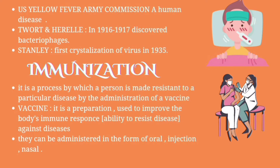Next, immunization. What is immunization? It is a process by which a person is made resistant to a particular disease by the administration of a vaccine. A vaccine is a preparation used to improve the body's immune response — meaning the ability to resist disease. Vaccines can be administered orally, by injection, or as prognosis.